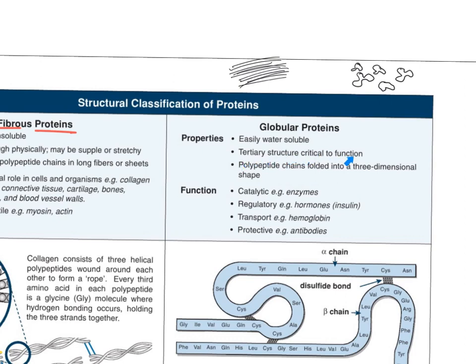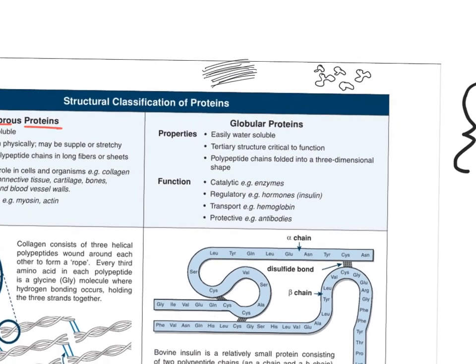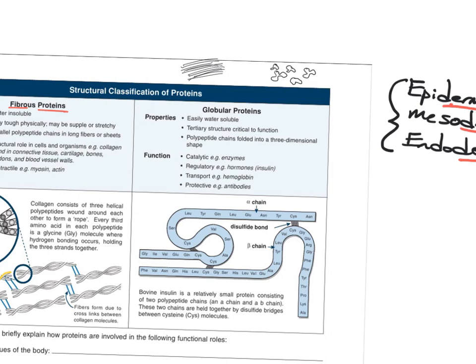Tertiary structure is critical to function. Primary structure is the order — the sequence — of the amino acids. Is it glycine, tryptophan, glycine, or tryptophan, glycine, tryptophan? The order of the amino acids impacts its function. The gene determines the amino acid sequence. Secondary structure is the small folding that happens within a region of the protein — many different types of folding can happen inside a big protein like hemoglobin.